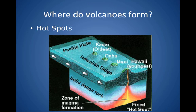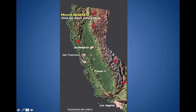Volcanoes can also form at hot spots — a fixed spot where the plate moves over it, forming a chain with the oldest volcano at one end. So we have three different locations where they can form. Here in California we do have a few volcanoes, with Mount Shasta being the largest one.